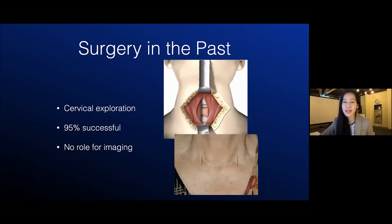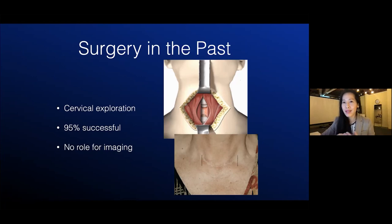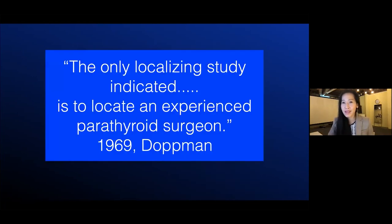In the past, we didn't do a lot of parathyroid imaging because the treatment was simply a bilateral neck exploration — a transverse incision across the neck looking at all four glands — and this was 95% successful, so there was no role for imaging. In fact, a radiologist once said: 'The only localizing study indicated for primary hyperparathyroidism is to locate an experienced parathyroid surgeon.' That was in 1969.